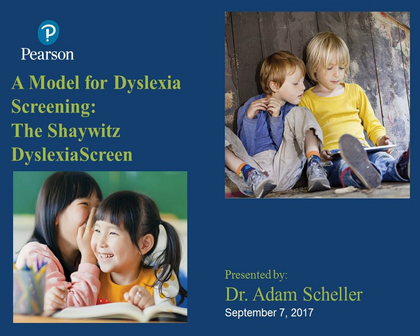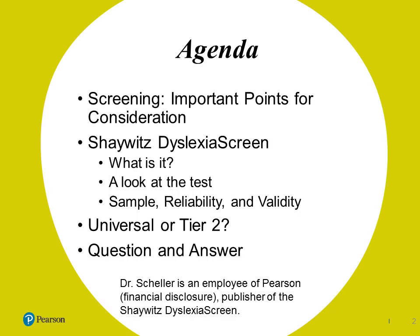We're going to be talking for this next hour about dyslexia screening. I'm going to talk about screening in general and really address some considerations we have to have when we're looking at screeners. There are some implications of which ones you choose — not making one better than the other — but there's a process by which you can account for some of the weaknesses in screening in general. It's important that we remember what screeners are used for. Then we are going to look at the Shaywitz dyslexia screen.